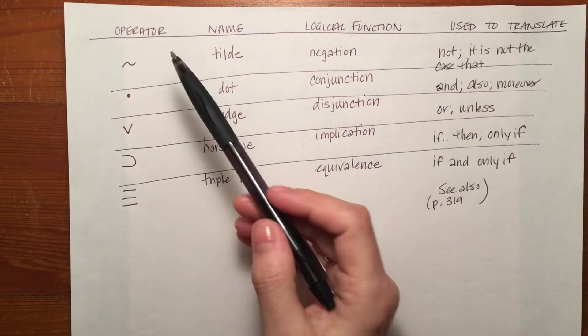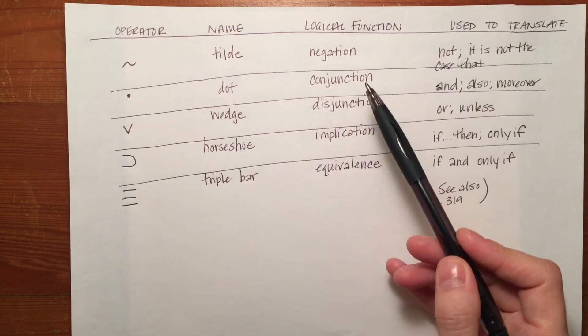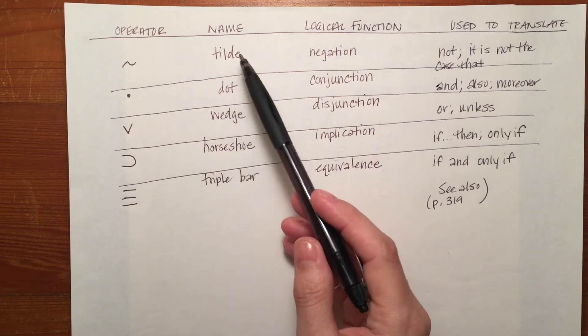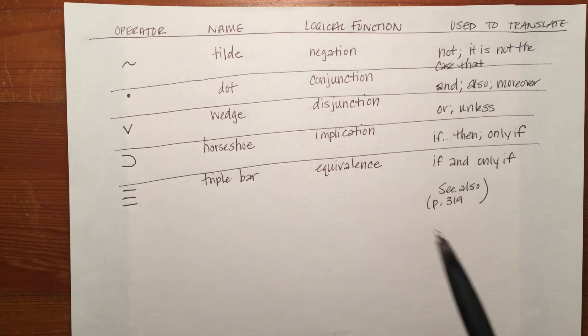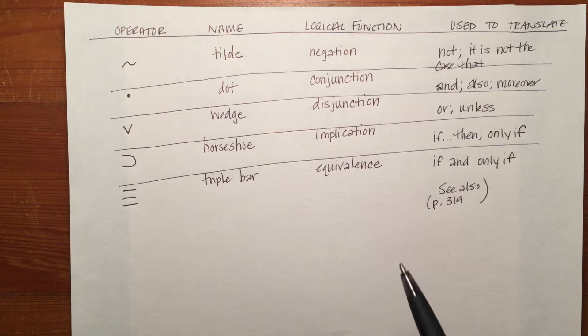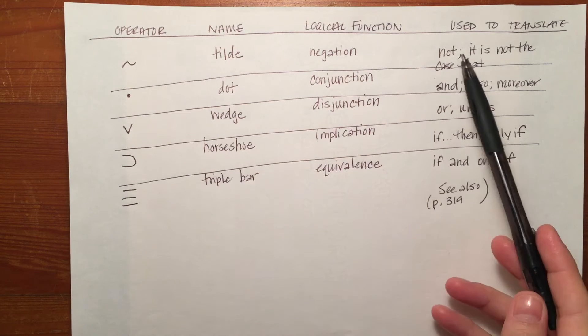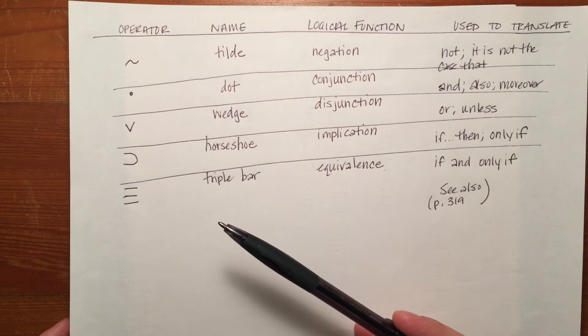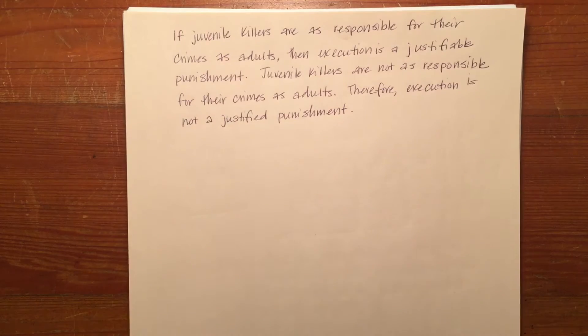You need to remember your operator, its name, its logical function, and most importantly what it's used to translate. We're going to take the words in the argument that are not the simple propositions and translate those words with operators. So we're looking for simple propositions and for the operators in these arguments.